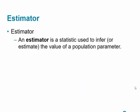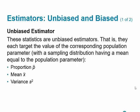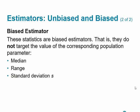An estimator is a statistic used to infer or estimate the value of a population parameter. An unbiased estimator targets the corresponding population parameter — meaning the sampling distribution of that statistic has a mean equal to the corresponding population parameter. Unbiased estimators include the proportion p-hat, the mean x-bar, and the variance S-squared. Biased estimators do not target the population parameter; these include the median, the range, and the standard deviation.